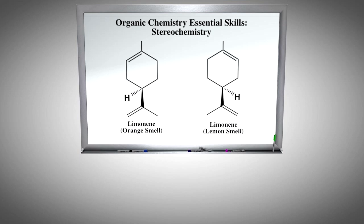While the two molecules on the board have the same gross connectivity, the atoms are arranged differently in space, which we call stereoisomers.